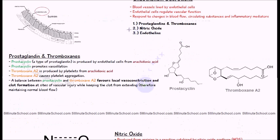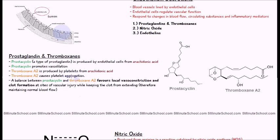The first substance is prostaglandins and thromboxanes. Thromboxanes aren't actually produced by the endothelial cells, but we'll relate them to prostaglandins. Prostaglandins are a group of substances — prostacycline is one of them, and it's produced by the endothelial cells from arachidonic acid. Prostacycline promotes vasodilation: the opening out of the blood vessel, or relaxation of the smooth muscle.